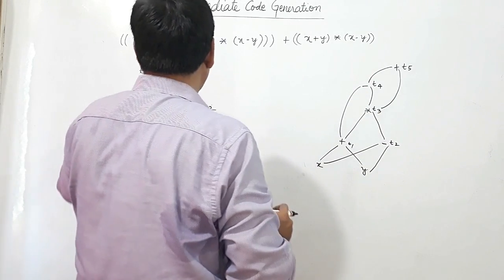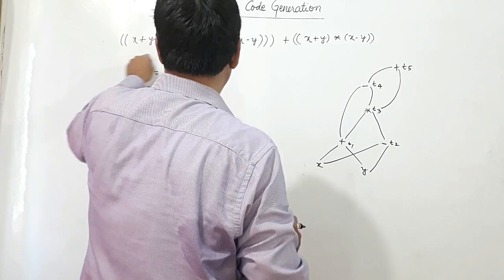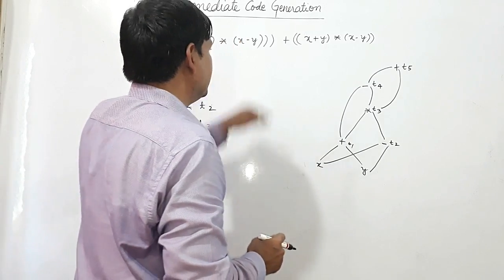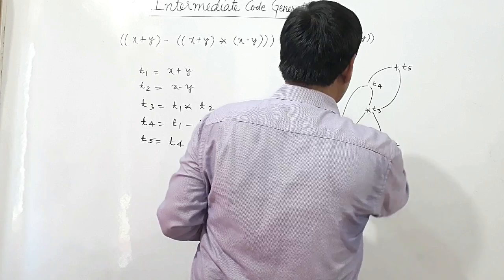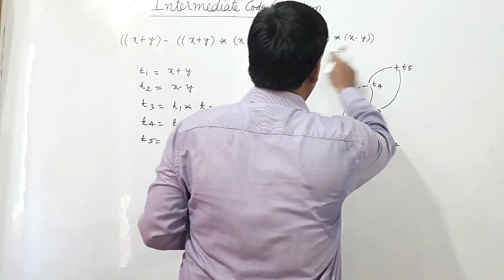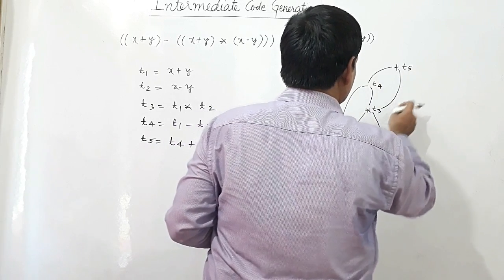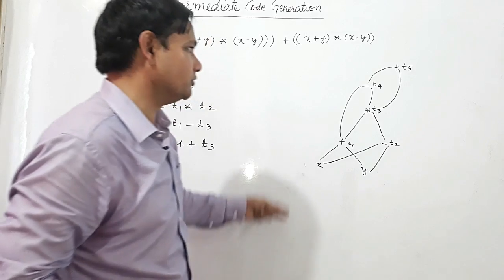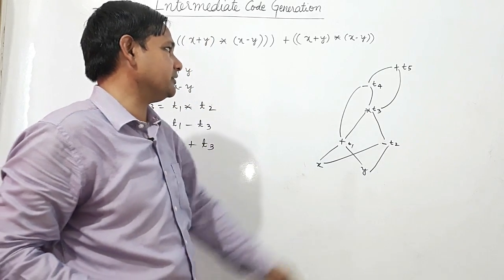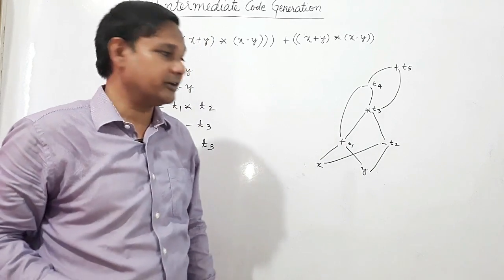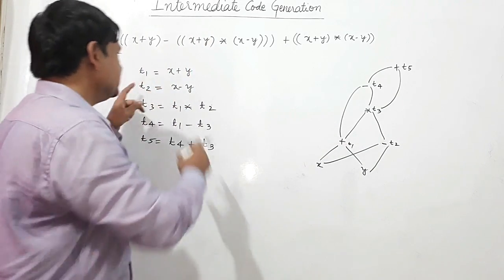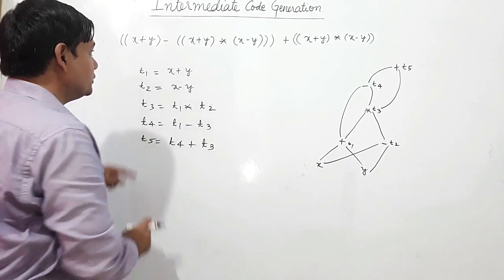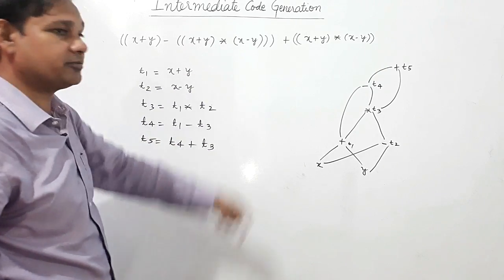t4 was containing this expression and t3 was containing this expression, so the final result is stored in t5. This is the directed acyclic graph for this expression, and these are the three-address codes for this expression.